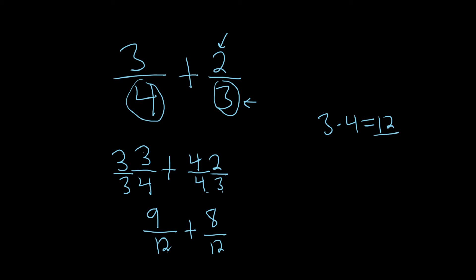So now we have the same denominator - a common denominator. Now we can add the top parts, which is called the numerator. So we can add the numerators: 9 plus 8 is 17. You get 17 over 12, and that would be the final answer.